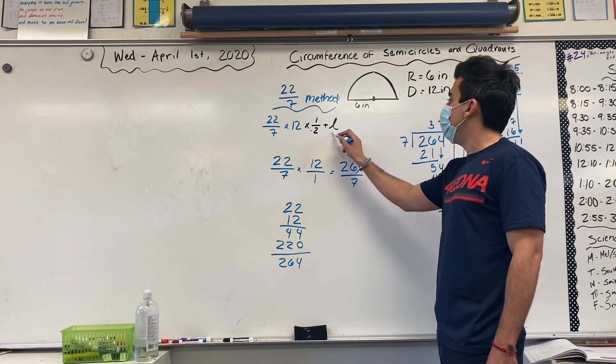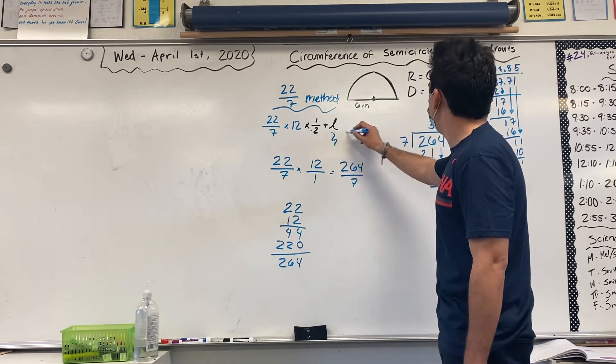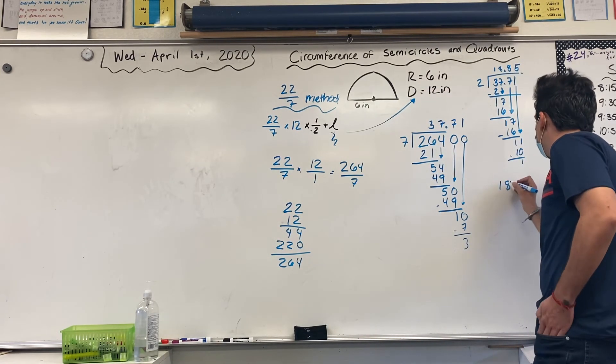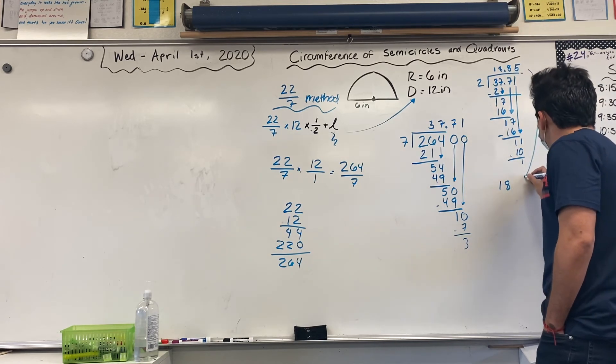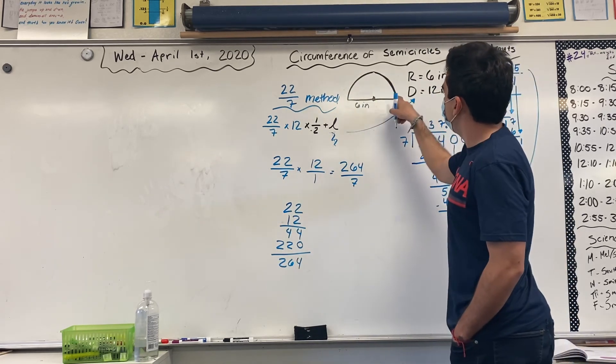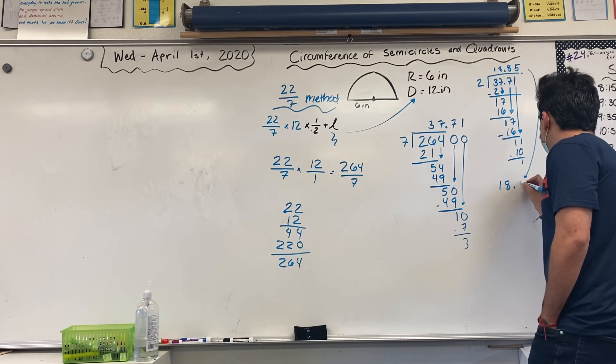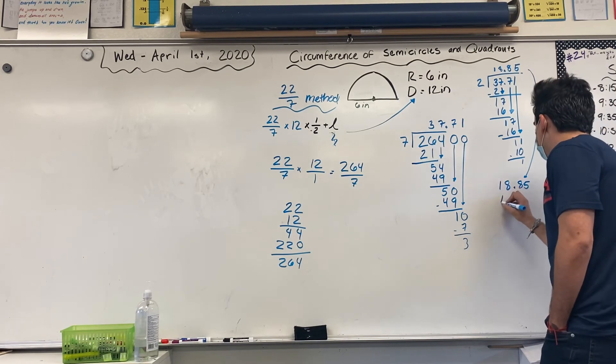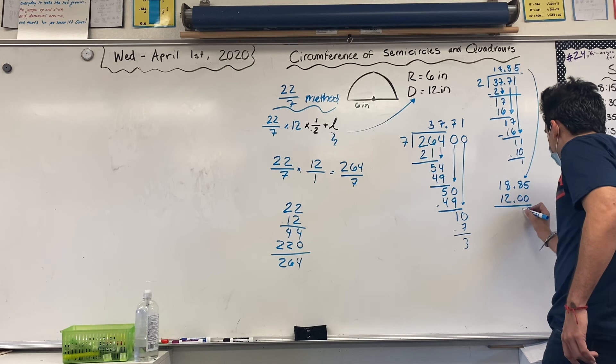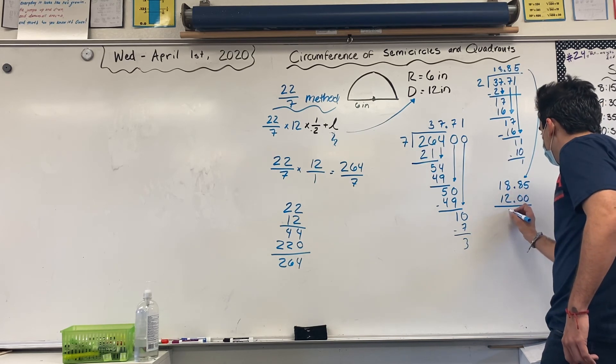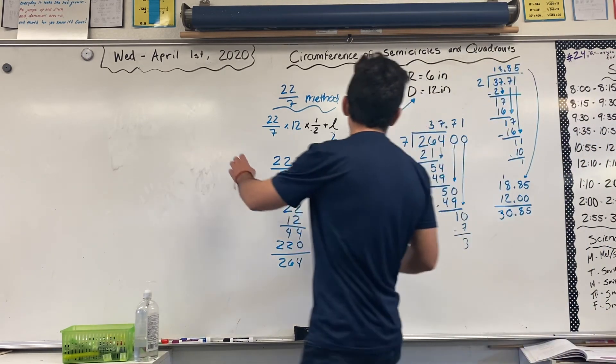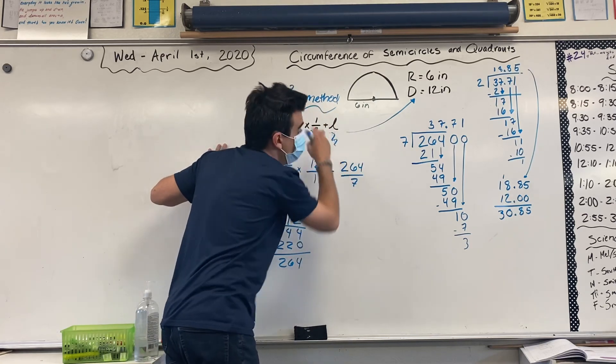Now, I need to add my length. And my length here is my diameter, and that's 12 inches. So, all I'm going to do now for my final step is take my semicircle circumference, the arc, and add the length. The arc plus the length. So, I have 18 and 85 hundredths plus 12 inches. I'm going to make that decimal point 0, 0, just to line everything up. 5 plus 0 is 5. 8 plus 0 is 8. 8 plus 2 is 10. 1, 1, 1 is 3 decimal point. So, the answer using the 22 over 7 method.